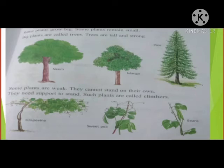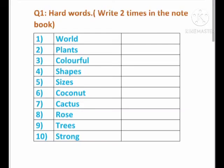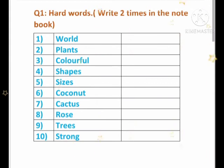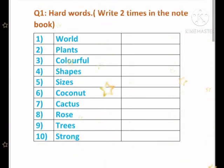So children, now in the next class I will continue the reading part. Now I am showing your homework worksheet. See children, your homework assignment — hard words, write two times in the notebook. अब जैसे notebook में two times complete करते हो, वैसे आपको two times complete करना है. Number one: world. Two: plants. Three: colorful. Four: shapes. Five: size.